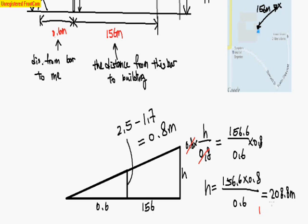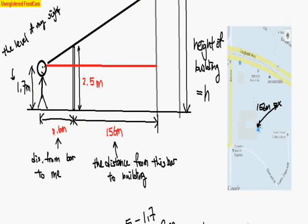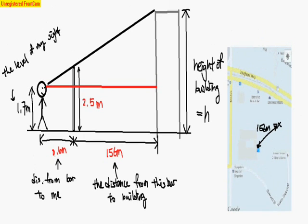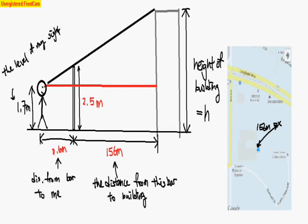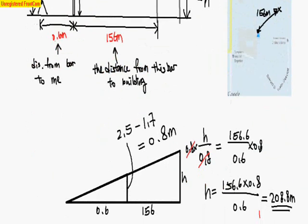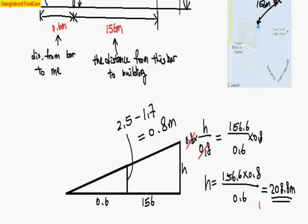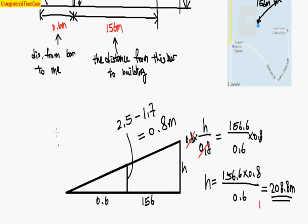This will be an approximate height for the building because there might involve some measurement error, which maybe happens in calculating the distance from me to the building or from either this bar's height or the distance over here. So if we eliminated these kind of errors, then we will get as close as possible for the building's height. Thank you for watching this video with me. Hope you enjoyed this.